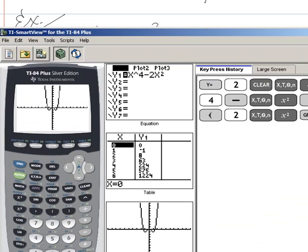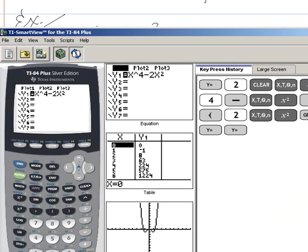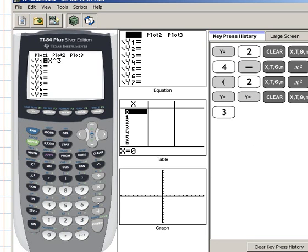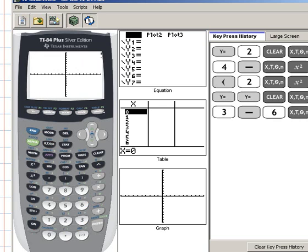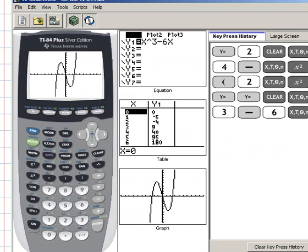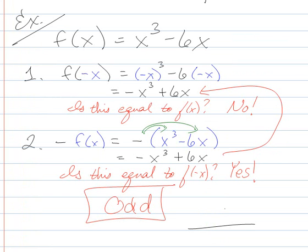Now again we can go ahead and graph this. I've got x cubed minus 6x. If I graph it, I get that example, which is the example I showed you initially whenever I was introducing odd and even functions. So this is going to look like this. We're looking at something that looks like that, and it's definitely symmetric across the origin. It's definitely a two-flipper.